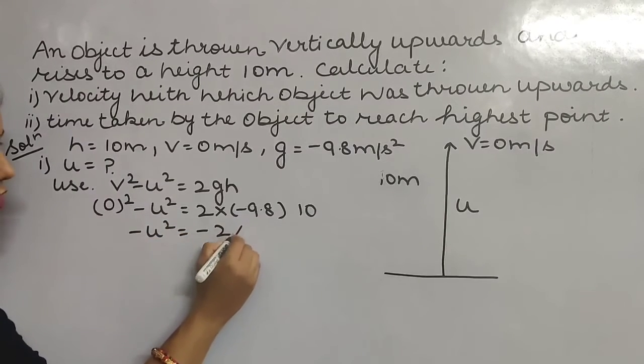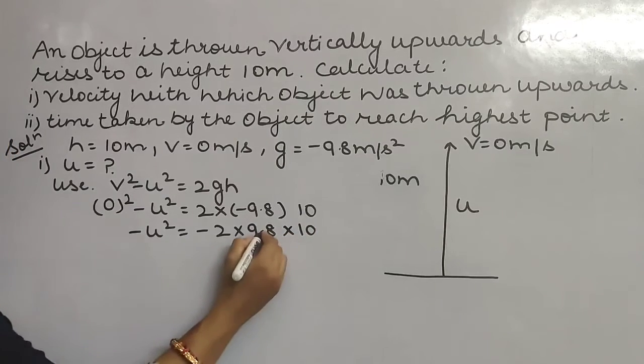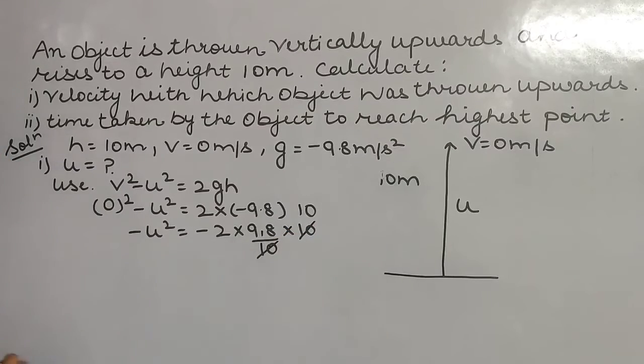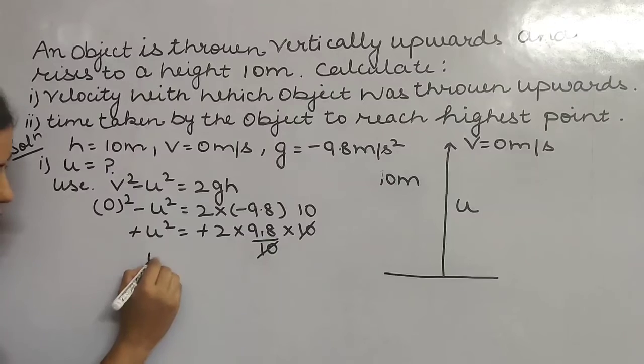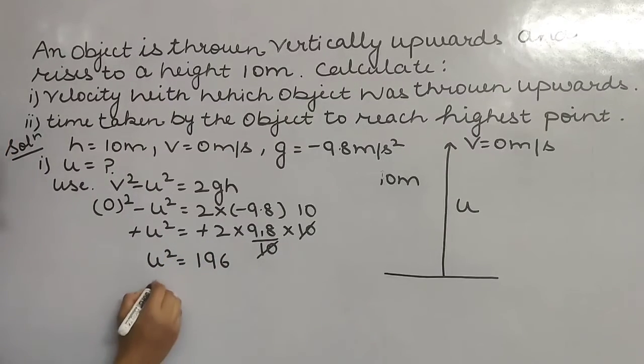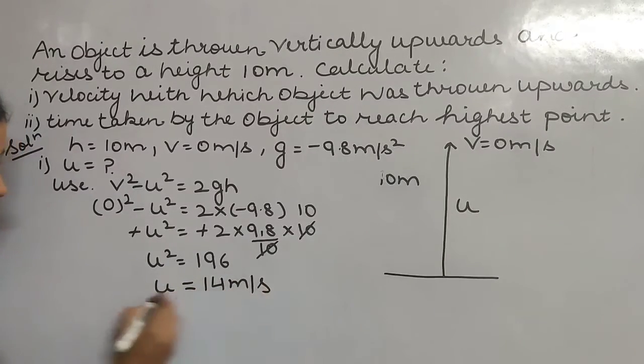You can remove the decimal point here, 10 and 10 you can cancel out, minus and minus cancel. So u² = 196, and the initial velocity is 14 meters per second.